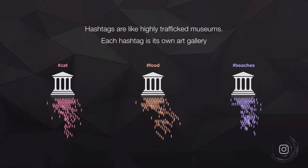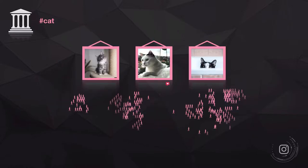So when you hashtag cat, you're basically hanging your photo up in the cat gallery. Anyone who's currently browsing the cat gallery can come across your post because you're nailing your content to the wall of that gallery. There are always millions or hundreds of thousands of people in that gallery, interested in looking at cats and browsing cute cat content.